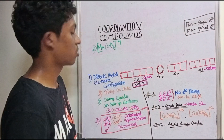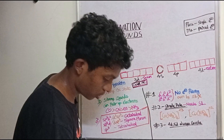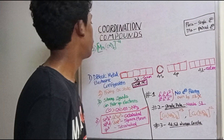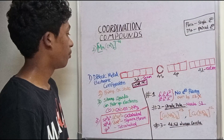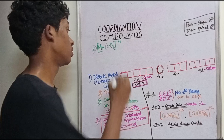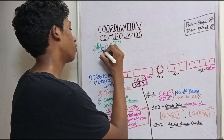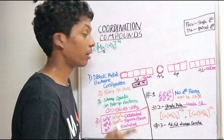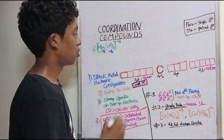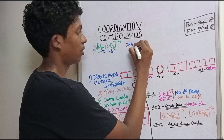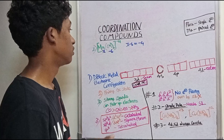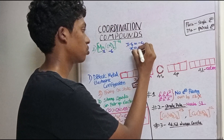We can add this structure. Now we will start with the oxidation state. Manganese oxidation state is x. CN is minus 1, and there are 6 of them, so minus 6. So x minus 6 equals minus 4. What is x? x is plus 2.